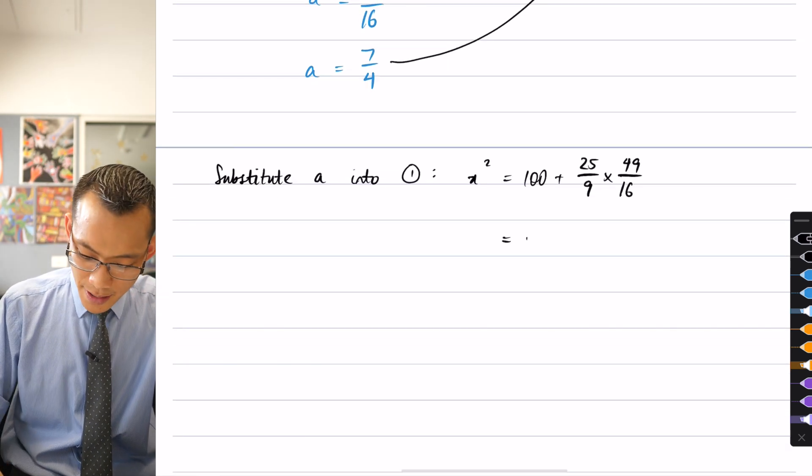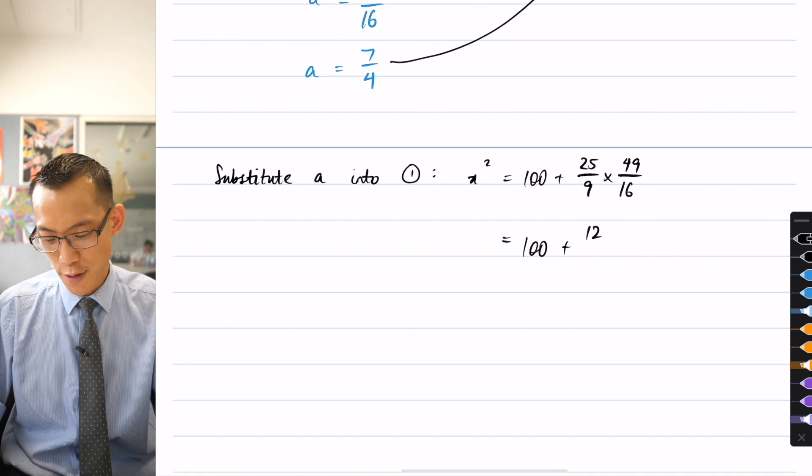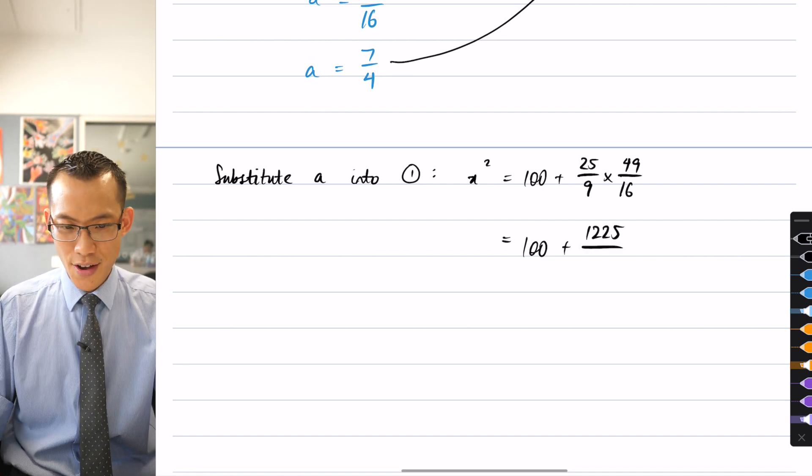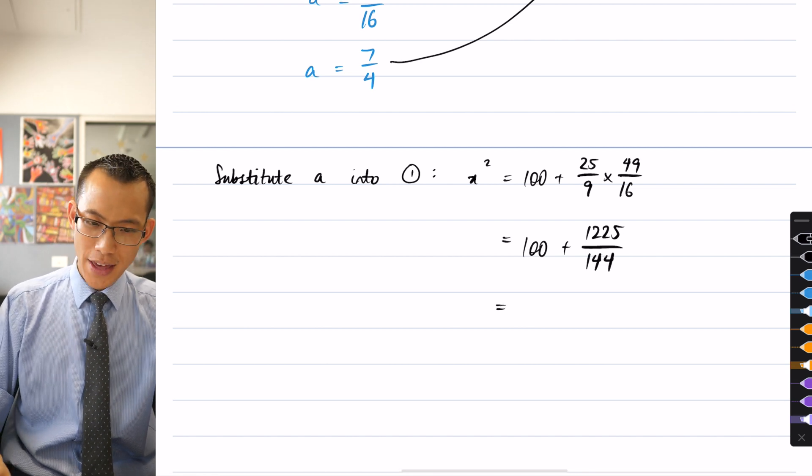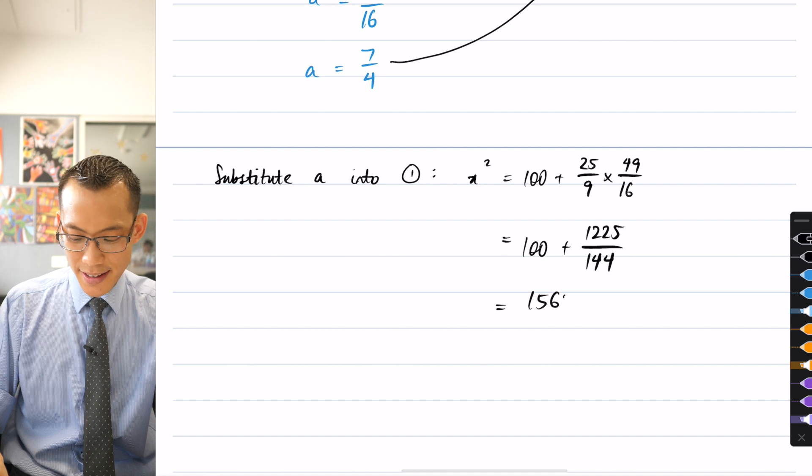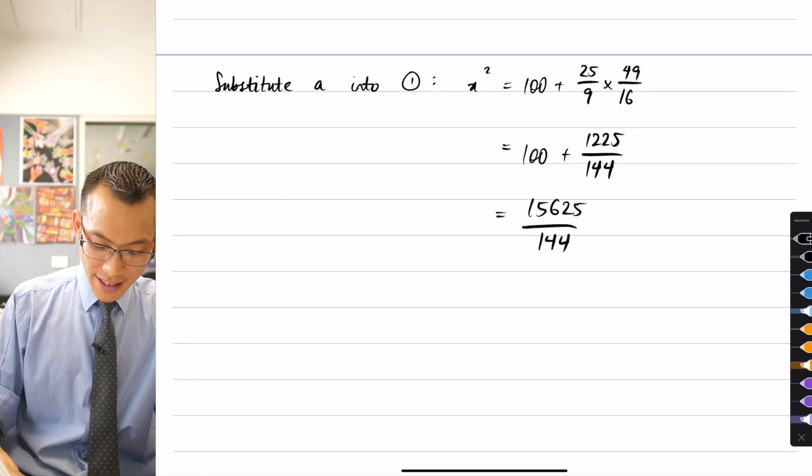So what am I going to get here? Well, this is going to be 100 plus, I've actually already calculated this just to make it a bit easier for us, 1,225 on 144. Up the top there, that's going to give you 15,625 on 144.